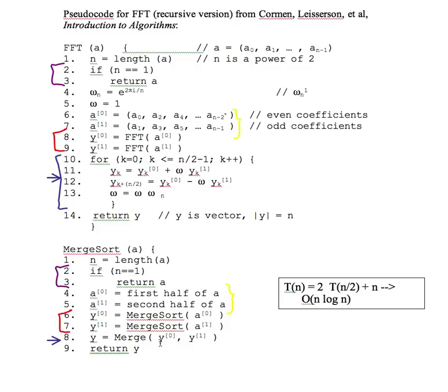My loop control variable k is marked in blue and is analogous to this merge function call here. This merge function call has you step through each of these arrays, compare elements with the other array, and then merge them together.